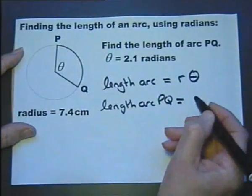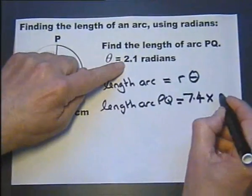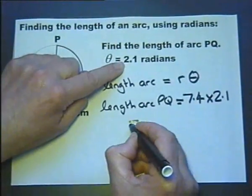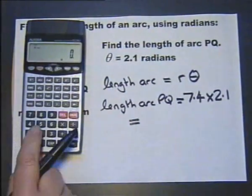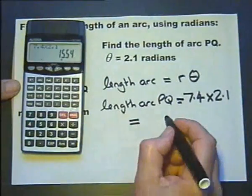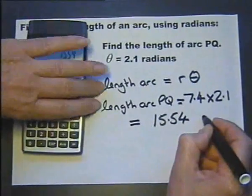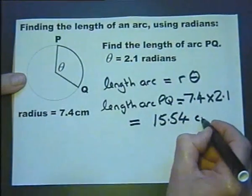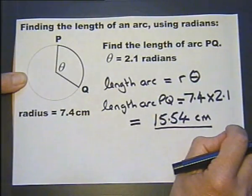7.4 multiplied by 2.1. I often feel that it's such a simple formula, people just don't believe that it's as simple as that. But it really is.